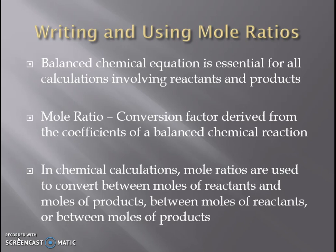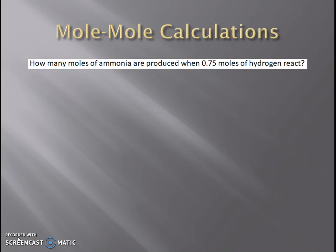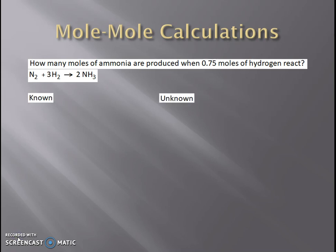So let's take a look at how we would apply those mole ratios in a mole-to-mole calculation. Here we have nitrogen combining with hydrogen to make ammonia. We have 0.75 moles of hydrogen that are going to react to make ammonia. In our balanced chemical equation, one mole of nitrogen combines with three moles of hydrogen to make two moles of ammonia. We'll start with our known and our unknown.